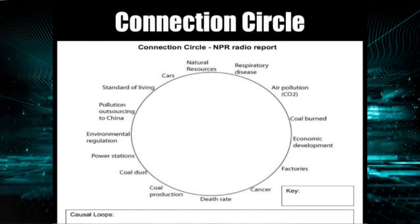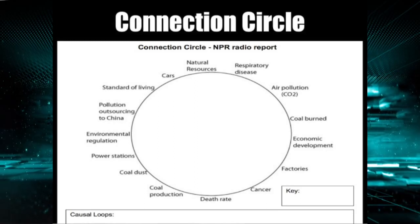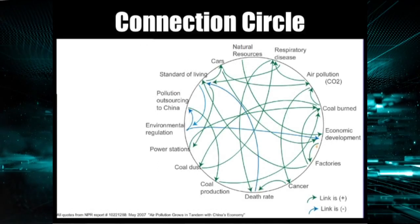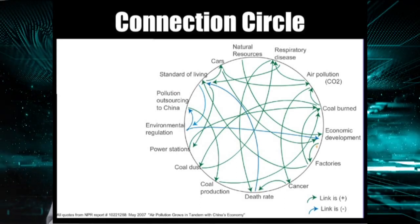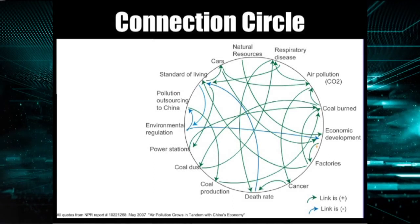They are formed by identifying and placing around the circumference all of the elements involved in the system, then drawing arrowed lines showing how elements affect one another, with positive and negative labels for positive and negative effects.